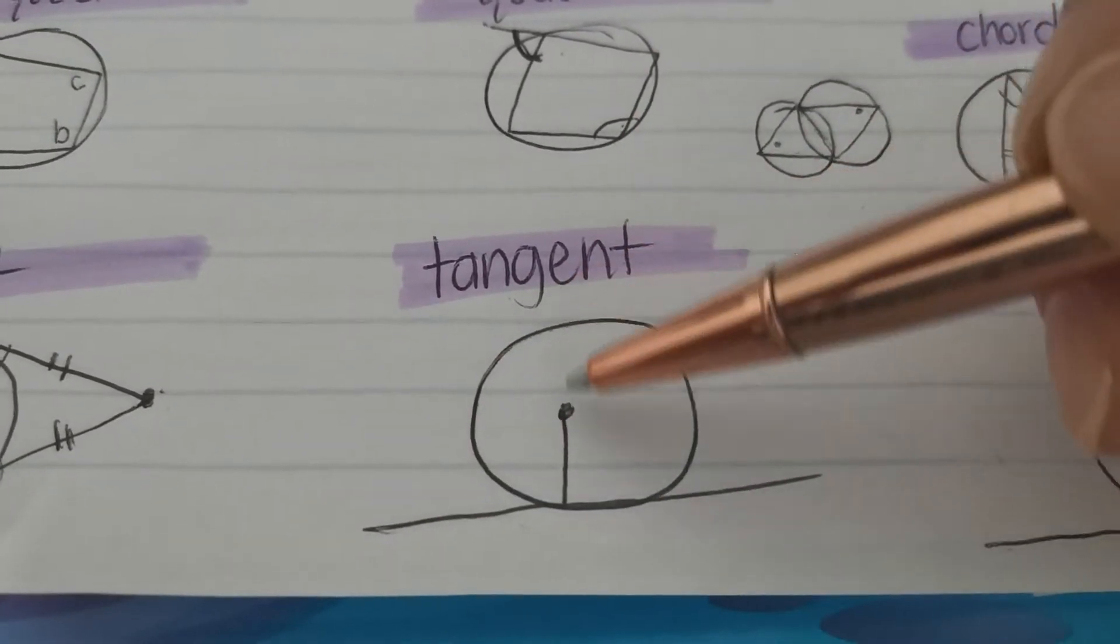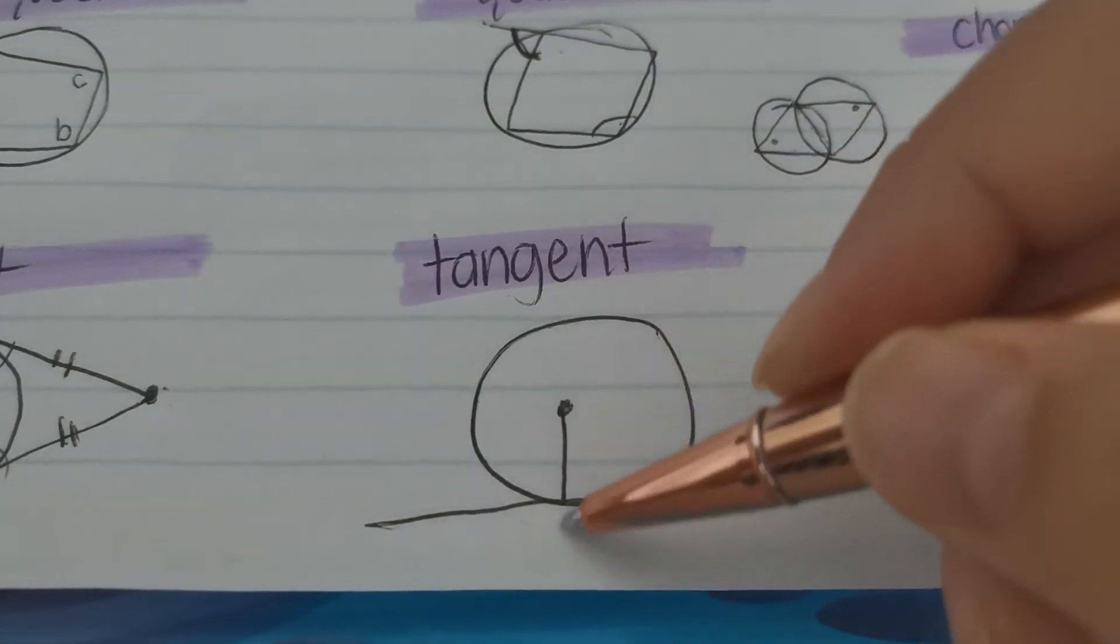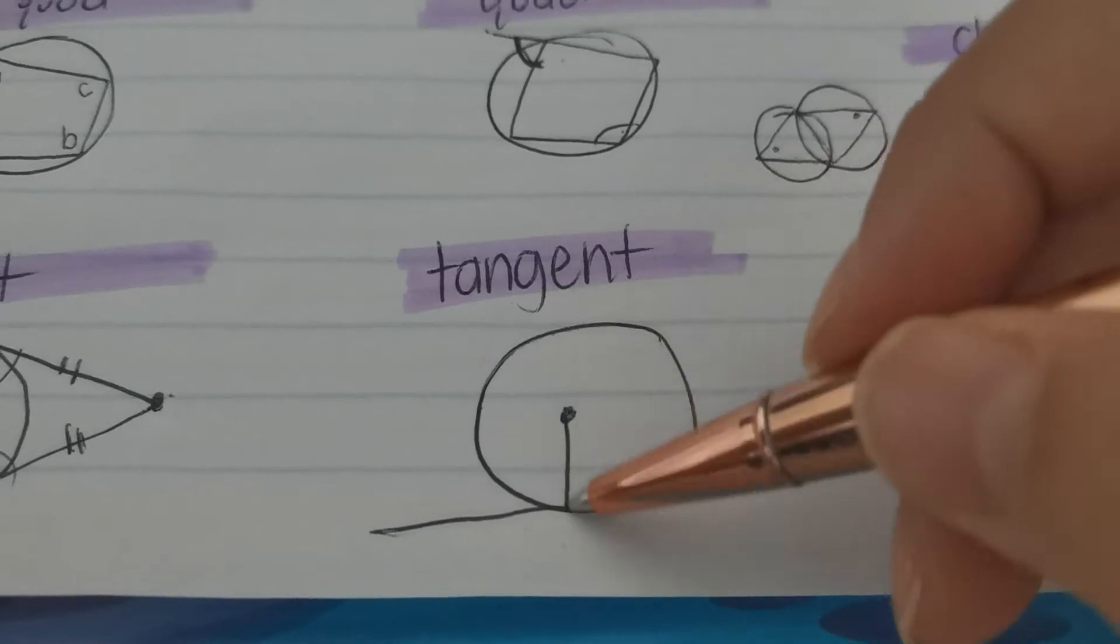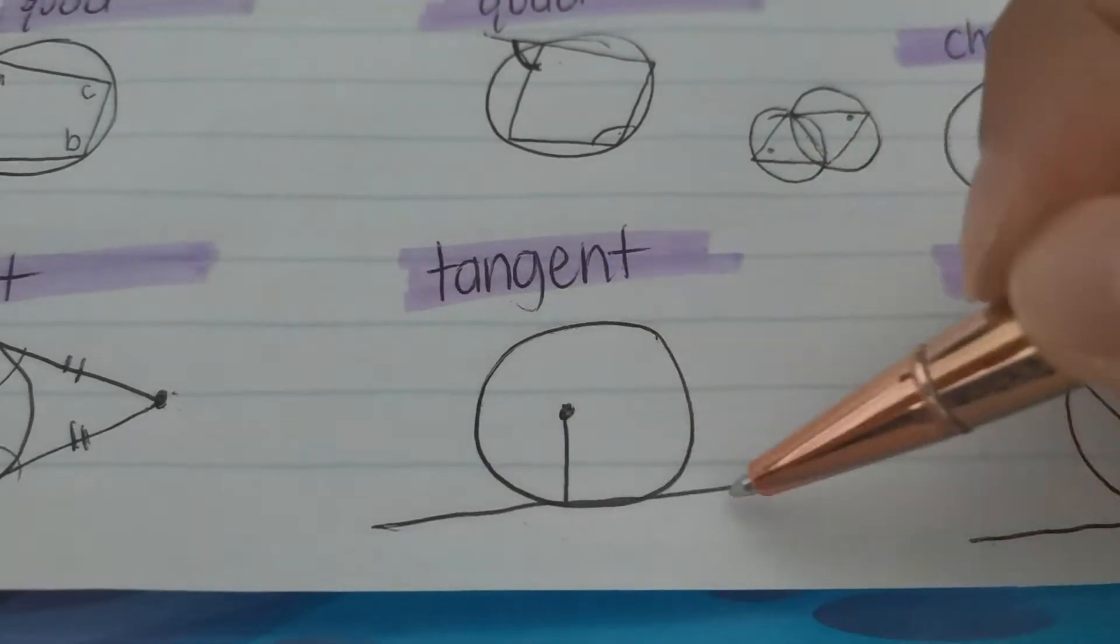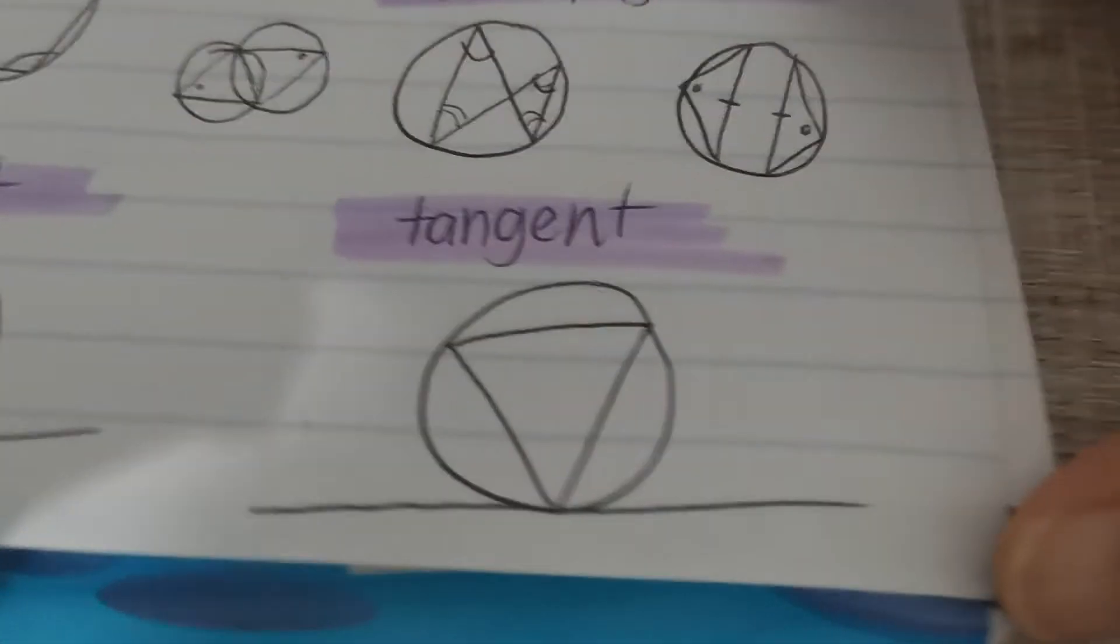And then we move on to this one over here, where we have the center of the circle and a tangent. If the line drawn from the center of the circle to the tangent, meaning the radius, meets with this tangent here, we have a 90 degree angle.